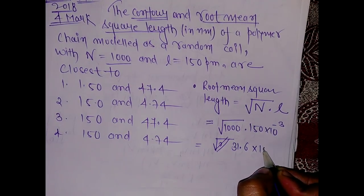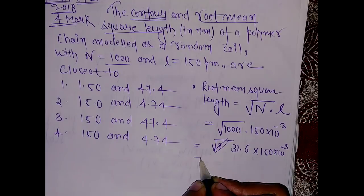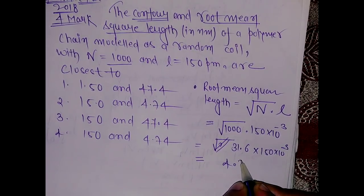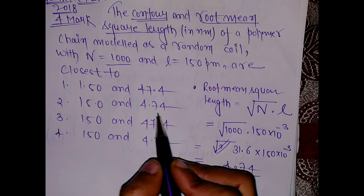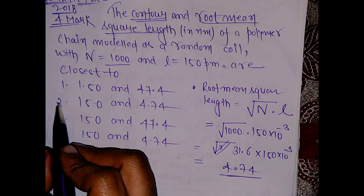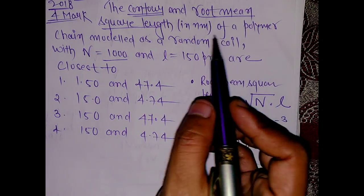So 31.6 times 150 times 10 to the power minus 3 gives around 4.74 nanometers. So option 2 or option 4 can be the answer. Let's calculate the contour length value also.